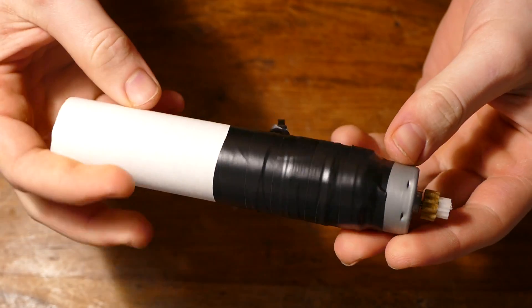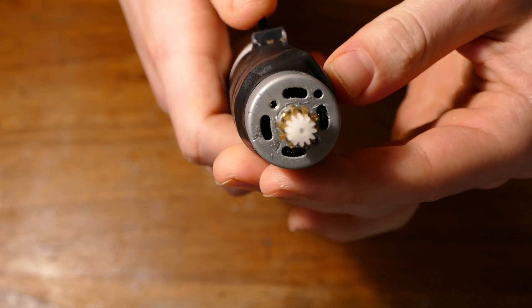Now tape the motor to the tube, and add some hot glue to the switch to make sure it's completely secure.